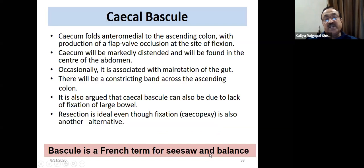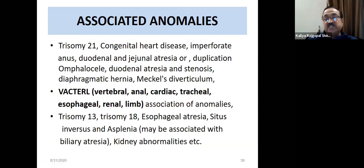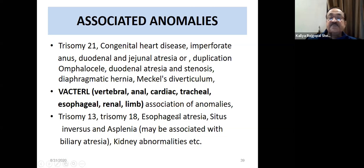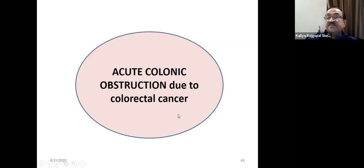This case is instructive: whenever one congenital anomaly is present — here, anorectal malformation — think of other associated anomalies. This patient had a hypermobile cecum and ascending colon, which had rolled to the opposite side. Associated conditions include VACTERL anomalies and related vertebral and anal anomalies. Cecopexy alone is not a good operation. The cecal volvulus and bascule concept should be well understood.